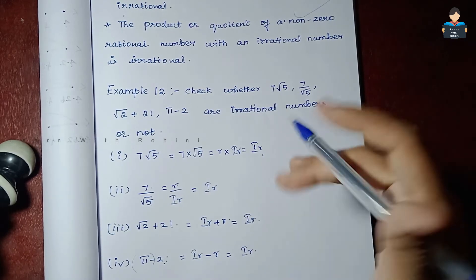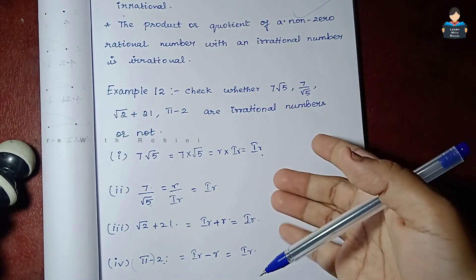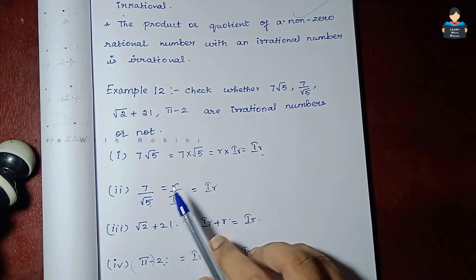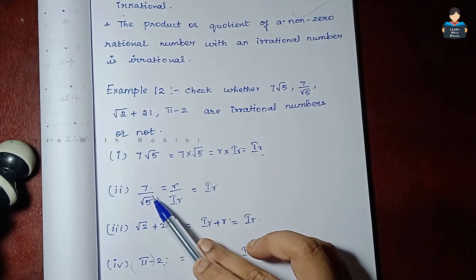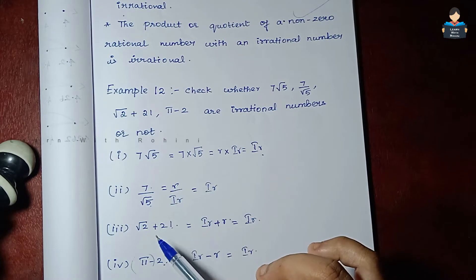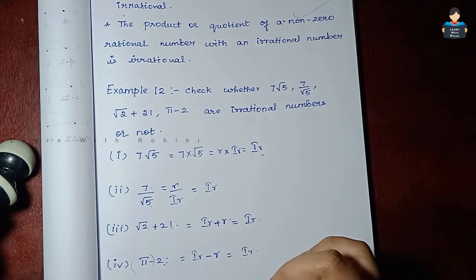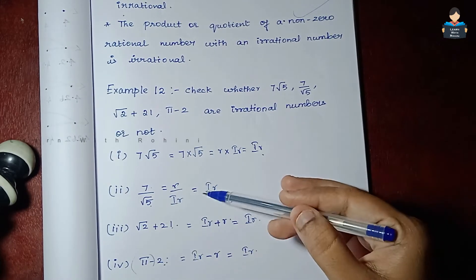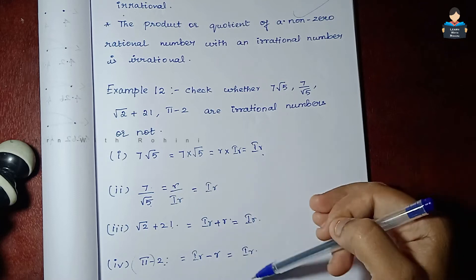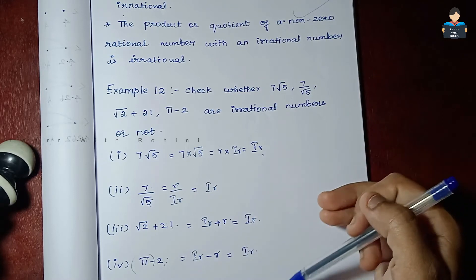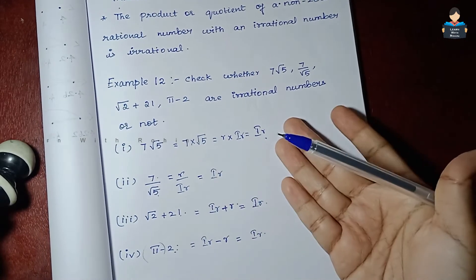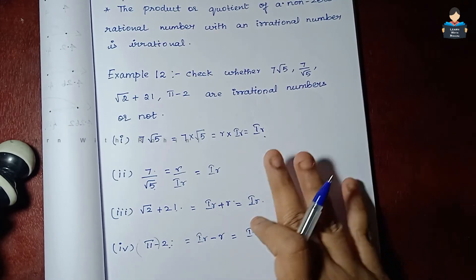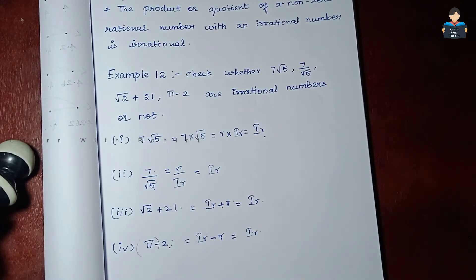So we can say: if we multiply, divide, add, or subtract a rational and an irrational number, the answer will be irrational. Next, Example 13.